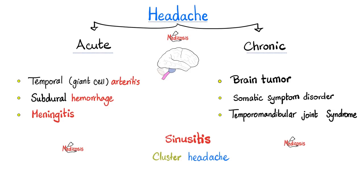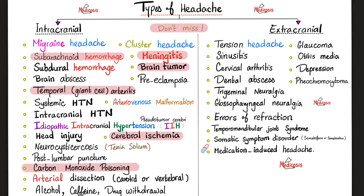Trigeminal neuralgia can lead to acute or chronic headache, and some patients achieve remission. Would we consider trigeminal neuralgia to be an intracranial or extracranial cause of headache? It is usually considered extracranial because it's not a brain disease per se, but a disease of a peripheral nerve — just like glossopharyngeal neuralgia. If you want me to make a special video on glossopharyngeal neuralgia, please let me know in the comments.